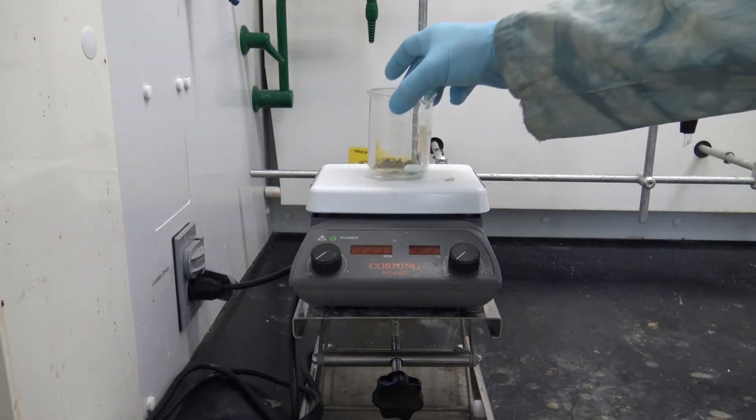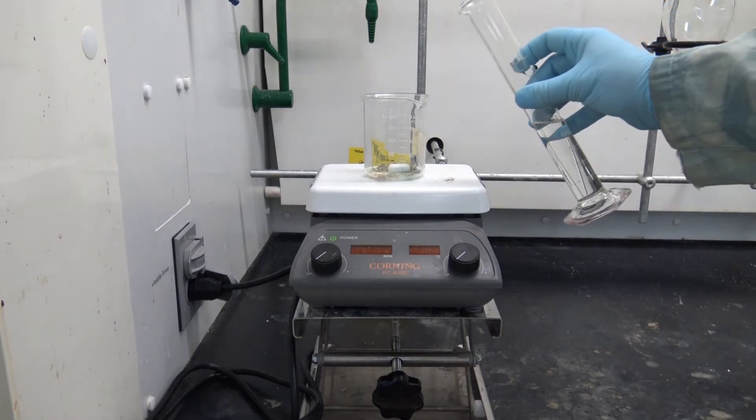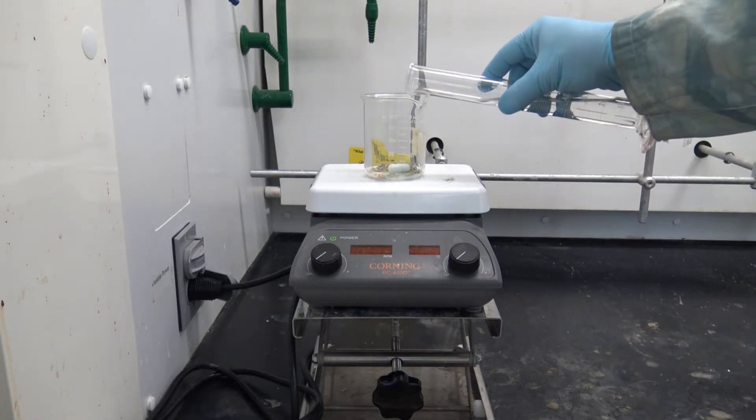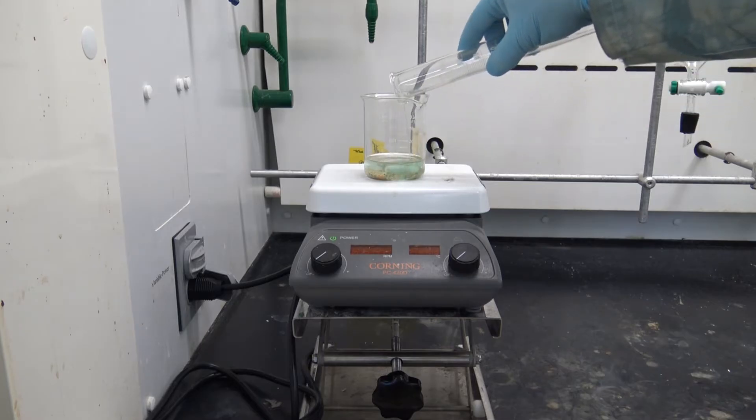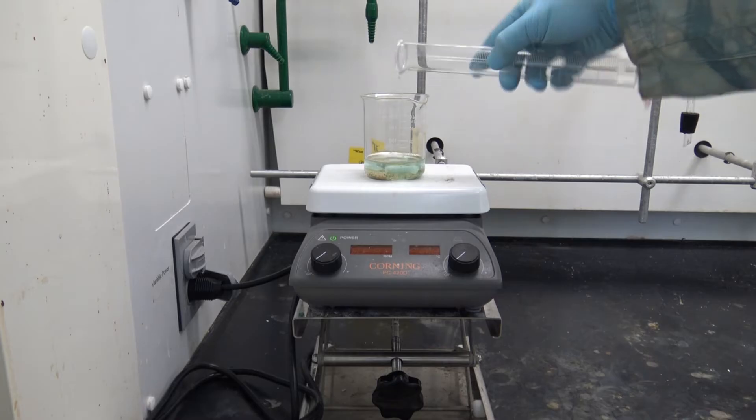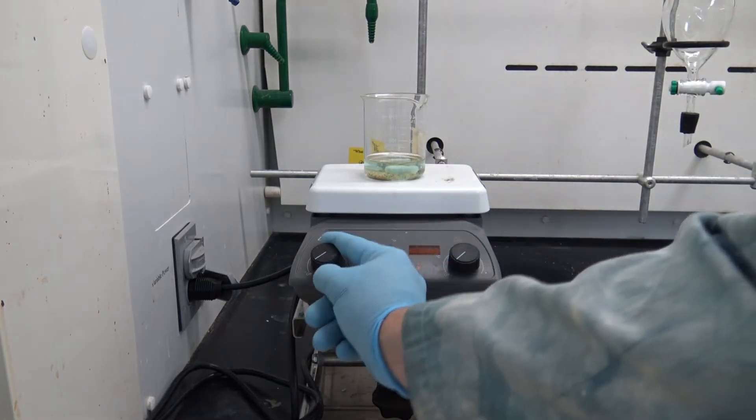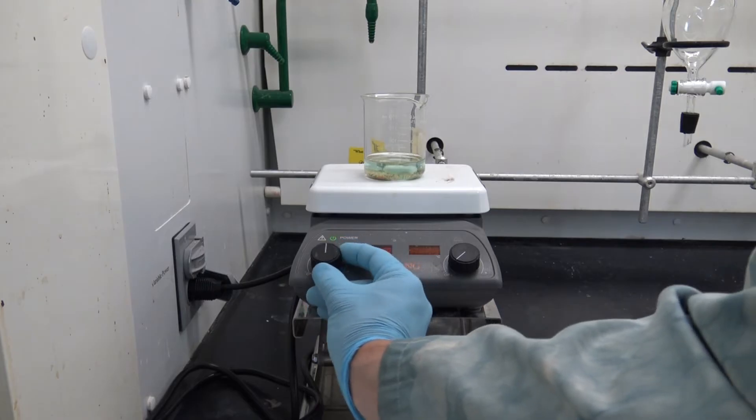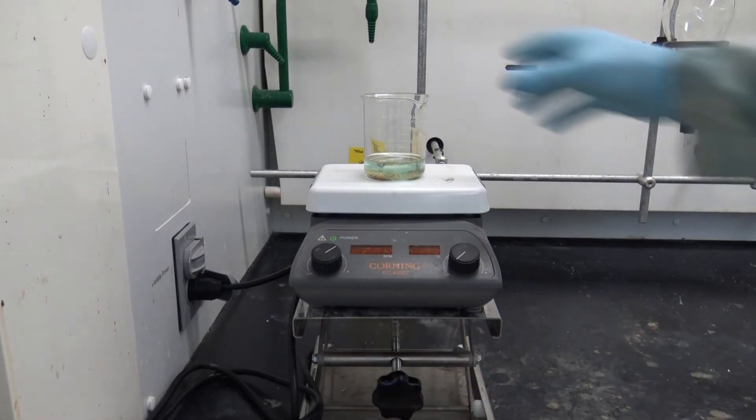Now let's begin the process of purifying this 2-naphthol that contains the blue food dye impurity. I'm going to put the beaker containing my impure naphthol on my stir plate and to it I'm going to add my N-butanol. This is going to dissolve both the 2-naphthol and the blue food dye impurity. So I'll start my stir plate going and in relatively short order I should see everything dissolve.